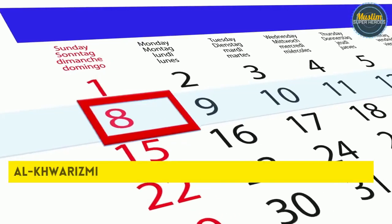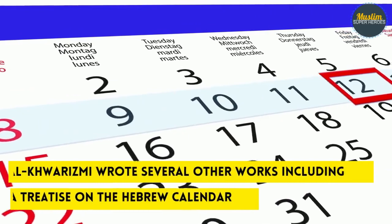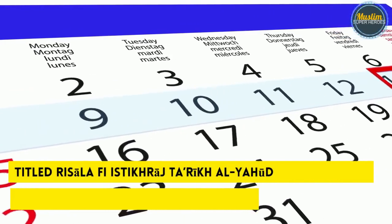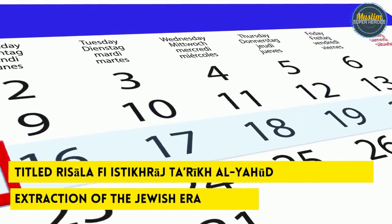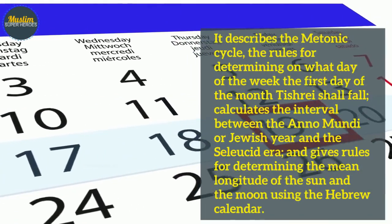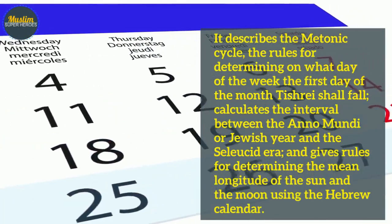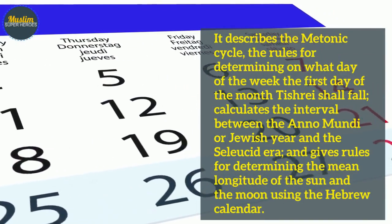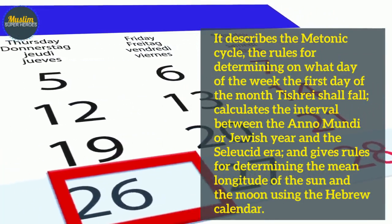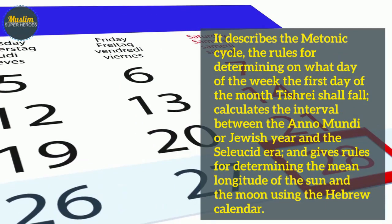Al-Khwarizmi wrote several other works, including a treatise on the Hebrew calendar titled Risala fi Istikraj Tarikh al-Yahud. It describes the Metonic cycle, the rules for determining on what day of the week the first day of the month Tishrei shall fall, calculates the interval between the Jewish year and the Seleucid era, and gives rules for determining the mean longitude of the sun and the moon using the Hebrew calendar.